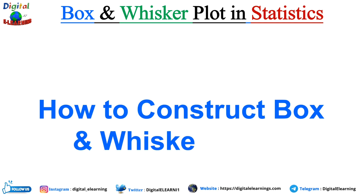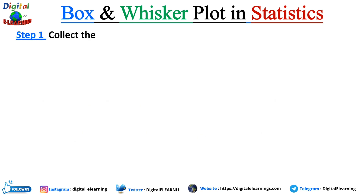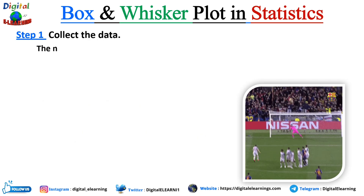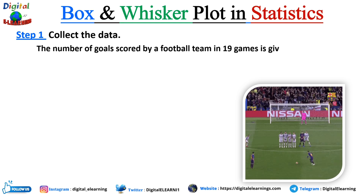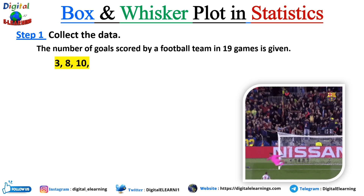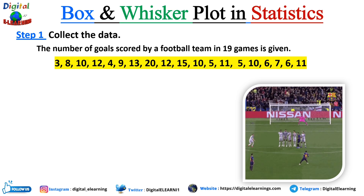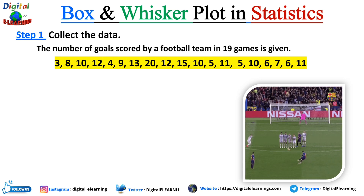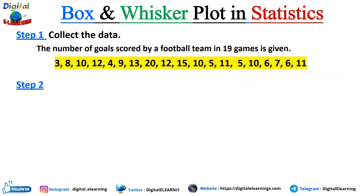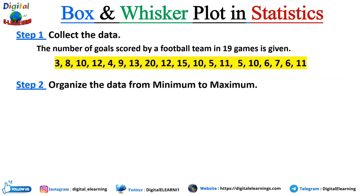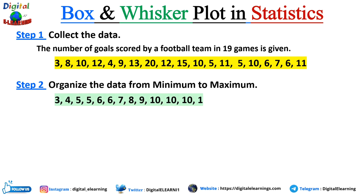Now let's see how to construct the box and whisker plot. Step 1: collect the data. Let's assume the number of goals scored by a football team in 19 games is given. We have 19 data points. Step 2: organize the data — arrange it from lowest to highest, that is, in ascending order from minimum to maximum.